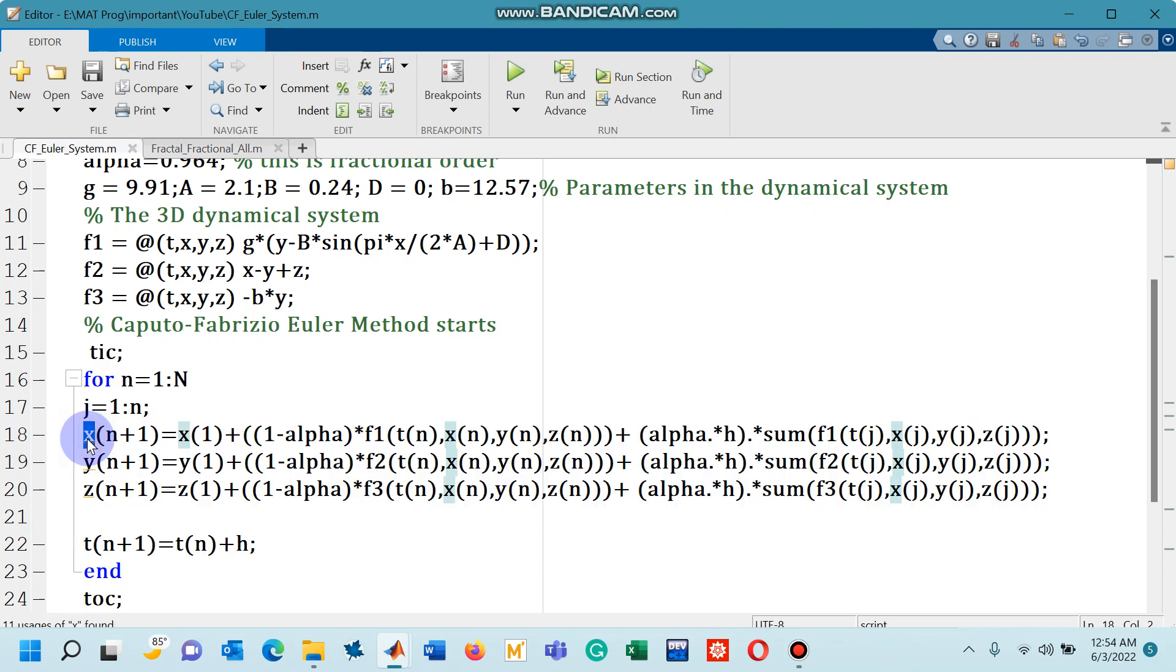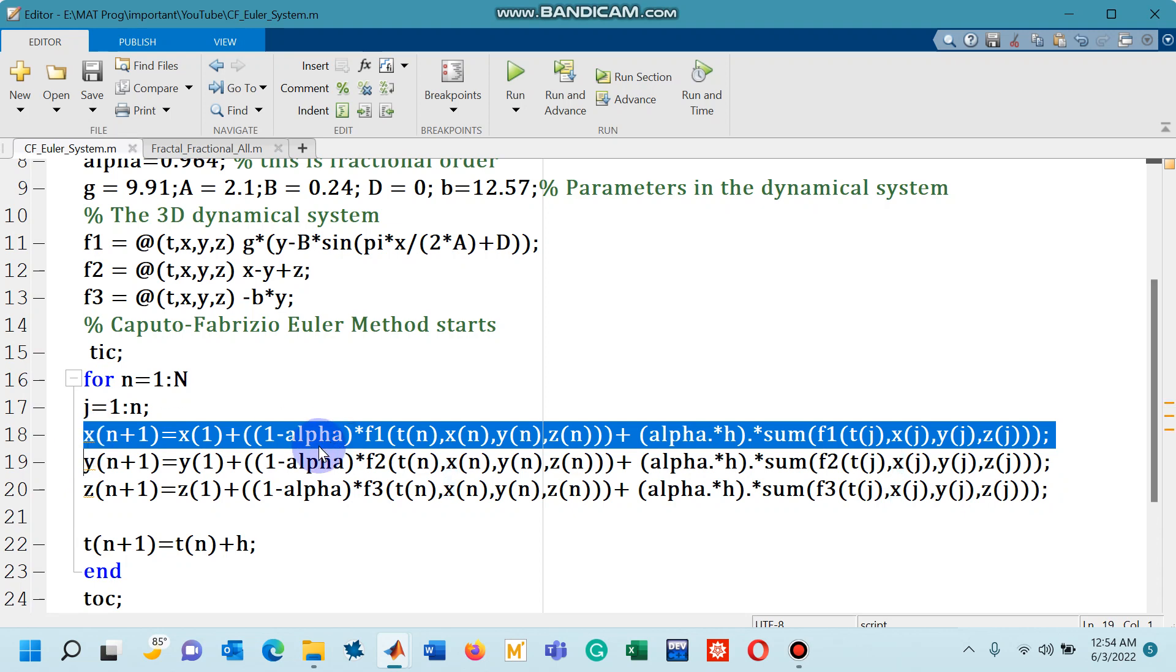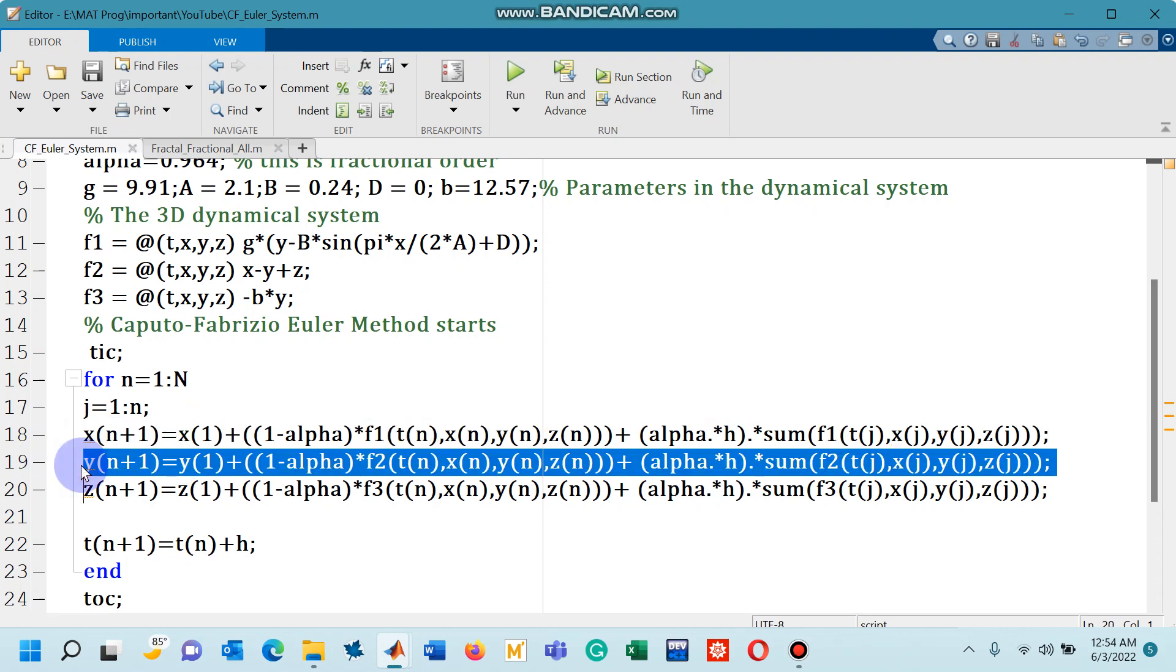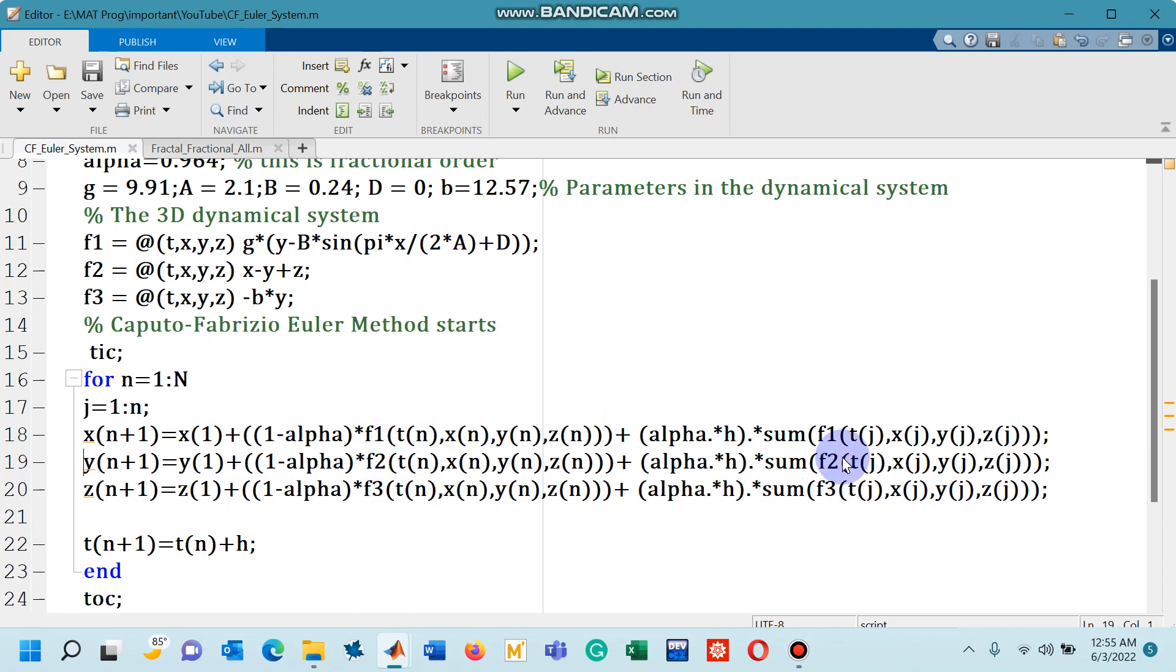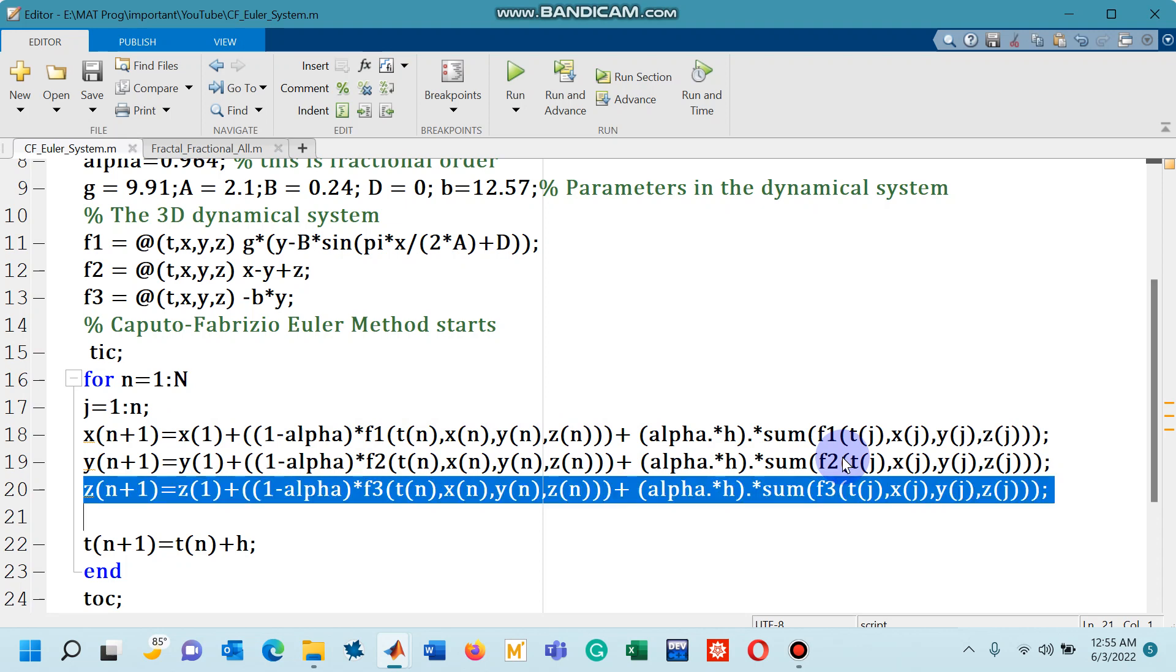So now if I talk about line number 18, this is the equation for the first equation F1 given in the system so you can see F1 and F1 here and then first value of the dependent variable. If you try to compare this line number 18 with line number 19, what difference you will notice is instead of X of 1 you have Y of 1 here, instead of F1 you have F2. Rest of the things are same and same is true for line number 20.